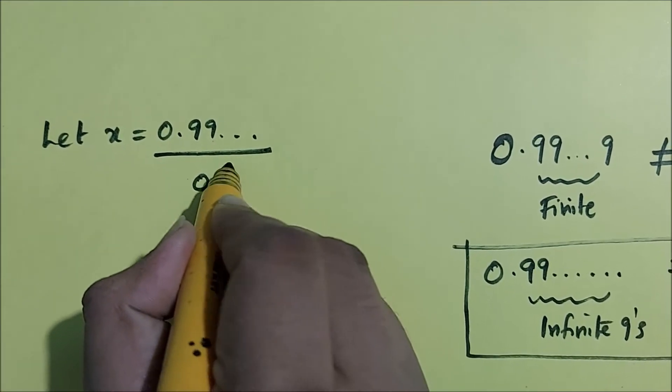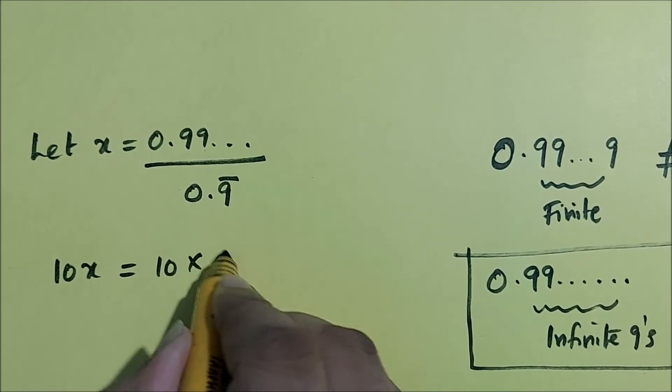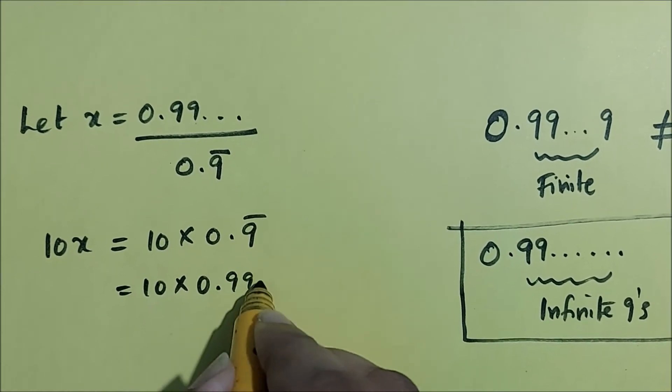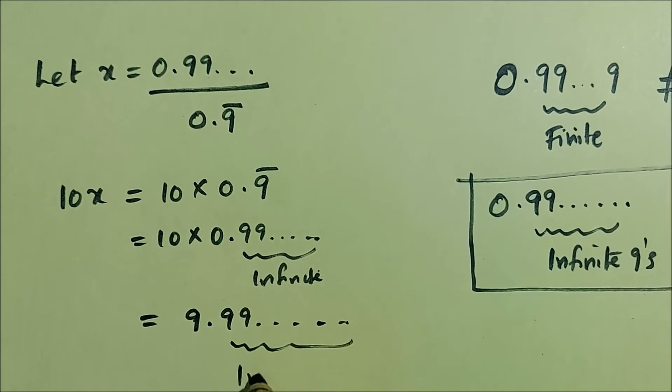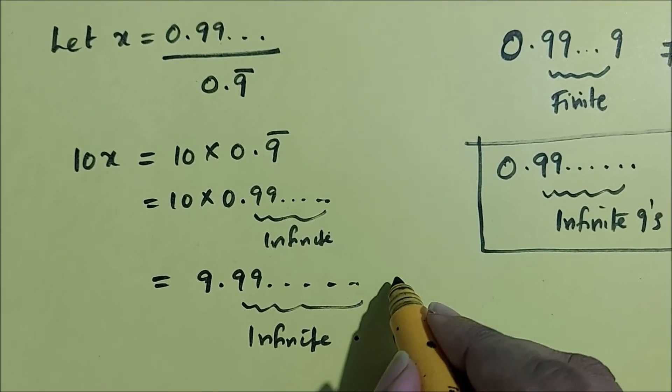Now we multiply x by 10. So 10x equals 10 times 0.9 bar, which is 10 times 0.99 infinite 9's, which is 9.99 infinite 9's. Do you agree with me? Yes. So we got that 10x equals 9.99 infinite 9's.